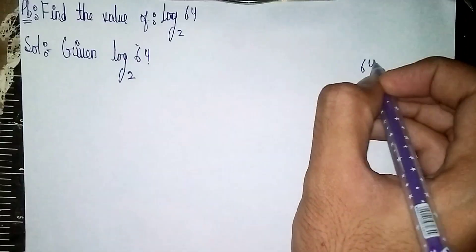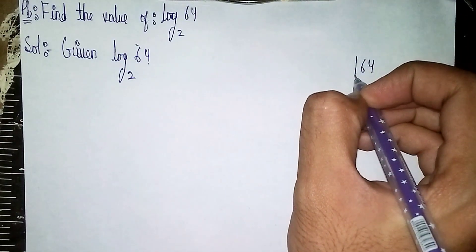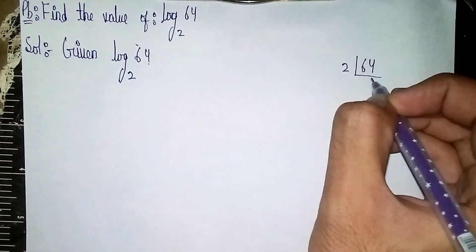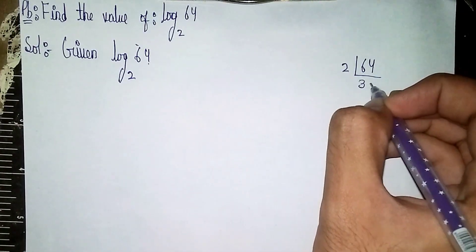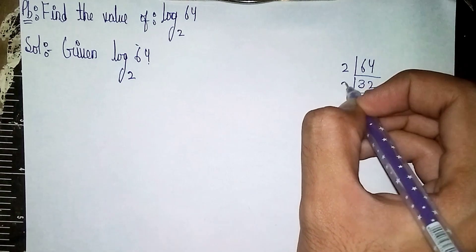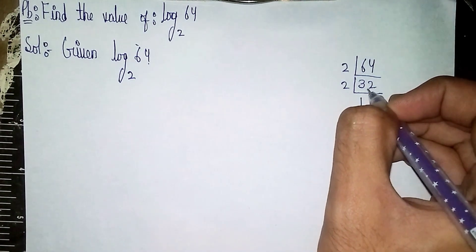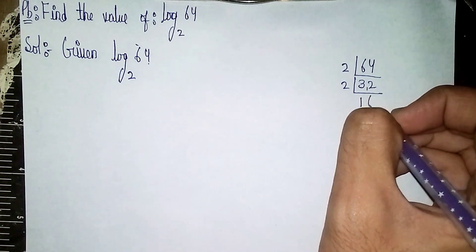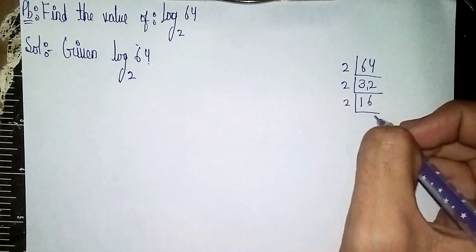So 2 into 64 is 32, 2 into 32 is 16, 2 into 16 is 8. 2 into 8 is 4, 2 into 4 is 2, 2 into 2 is 1.